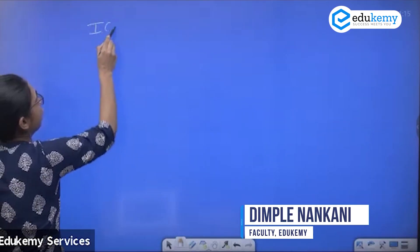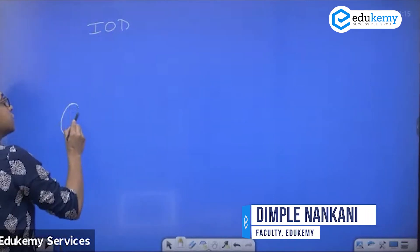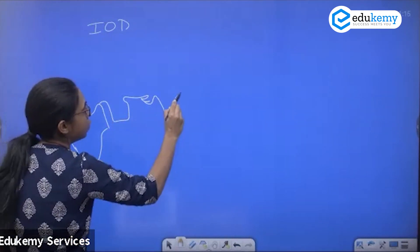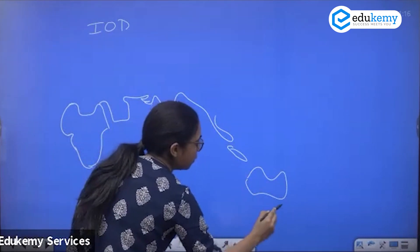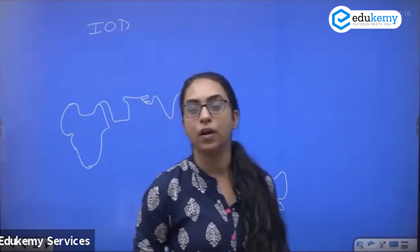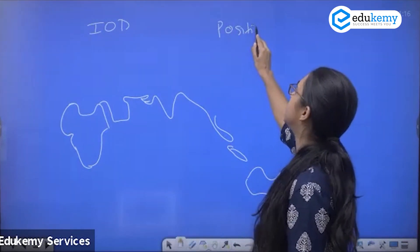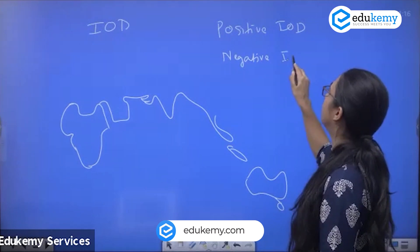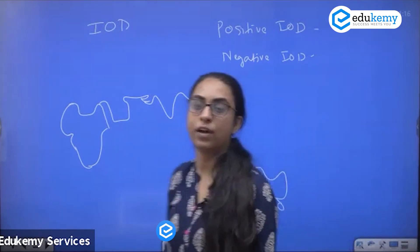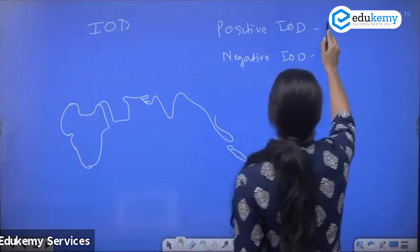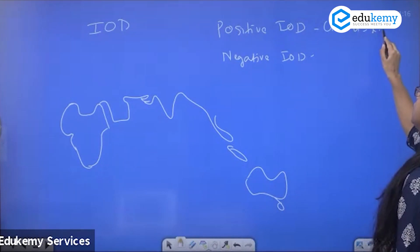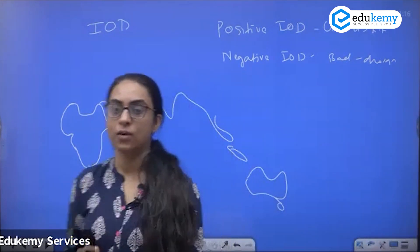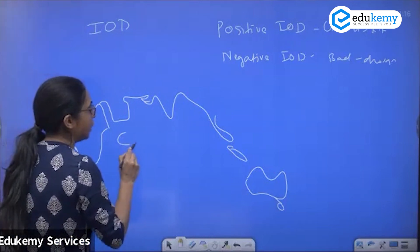What is the Indian Ocean Dipole? Looking at the Indian Ocean, positive IOD will bring rainfall in India, while negative IOD brings drought-like conditions. So positive IOD is good for India and negative IOD is bad for India.